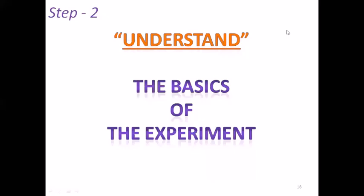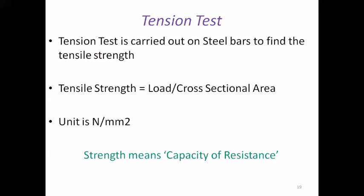Now, moving to second step: The basics of the experiment. The basic is tension test. Tension test is carried out on steel bars to find the tensile strength of the material. As we are dealing with strength of material subject, it means we're targeting strength. As per this tension test, we will be calculating the tensile strength of the material, that is steel bars: mild steel bar and TMT steel bar. Tensile strength is given by load upon cross sectional area. And this unit is Newton per mm square. And you are already aware of the meaning of strength: capacity of resistance.